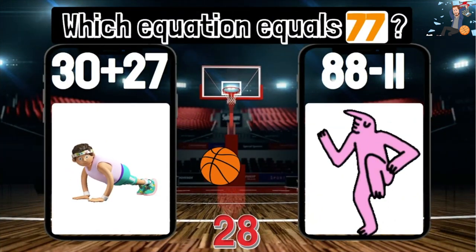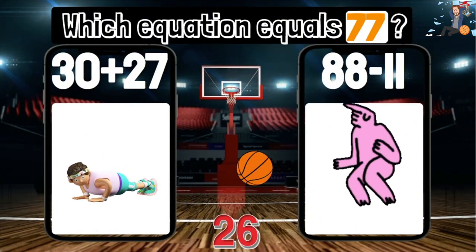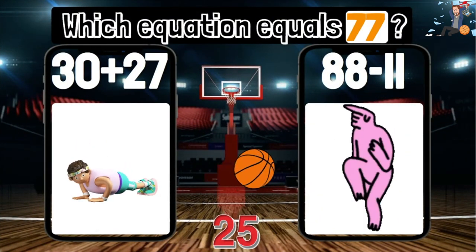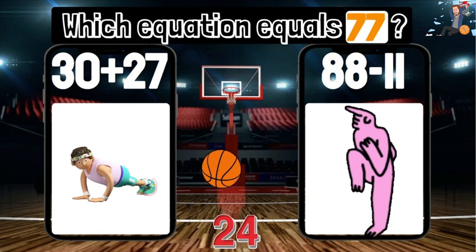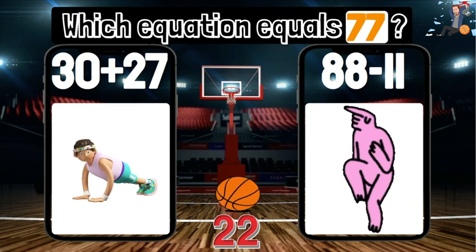Which equation equals 77 — 30 plus 27, or 88 minus 11?